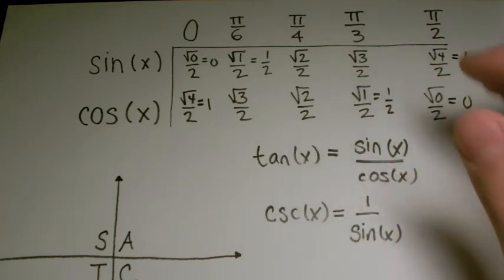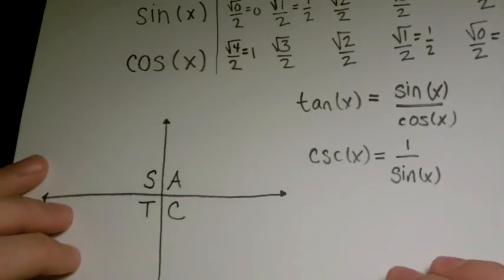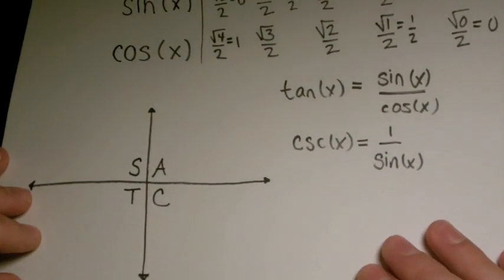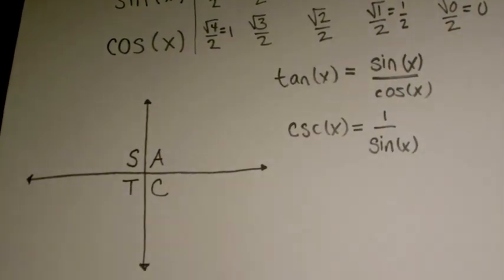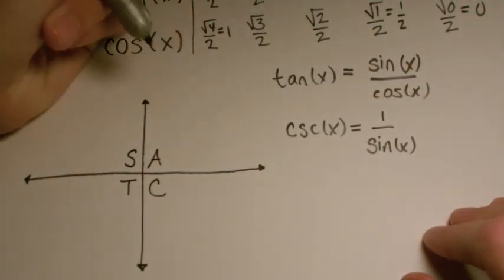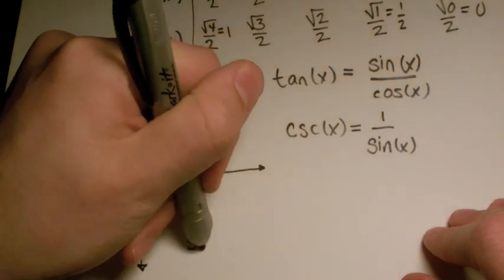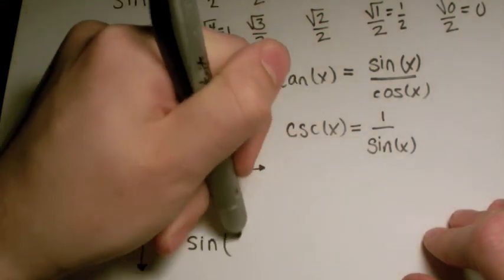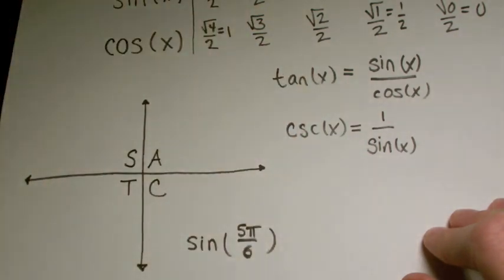But the absolute value will be √3 over 2. So how do you figure out, you know, if it's positive or negative? Well, of course, there's a trick for that too. So down here in my little quadrant, I don't have a fancy whiteboard yet, but I do have this paper. We have four quadrants. Say they were to ask you the sine of, let's say, sine of 5π divided by 6.